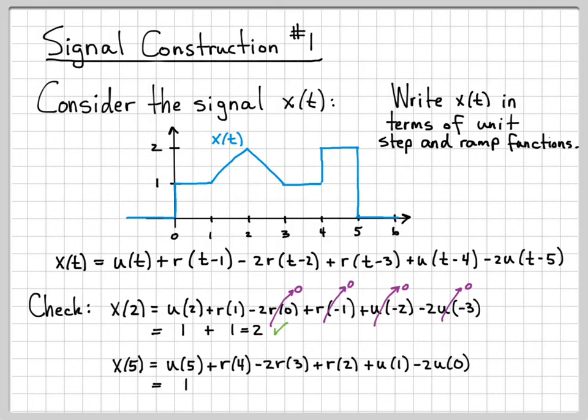the unit step at time five is equal to one. The ramp at time four is equal to four. Remember, r(t) is equal to t for time greater than or equal to zero. So you just replace whatever you see here right there. Minus 2 times 3 plus 2. Unit step at time one is equal to one. And minus 2 times the unit step at time zero is equal to one.